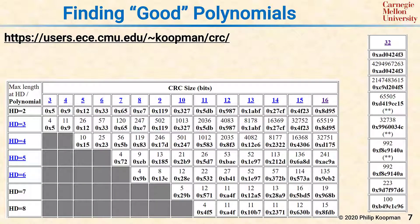The bad news is that the only way to know you found the best possible, or at least a good polynomial, is to try all possible polynomial values. So for a 32-bit polynomial, that's 2 to the 32 possible feedback patterns.